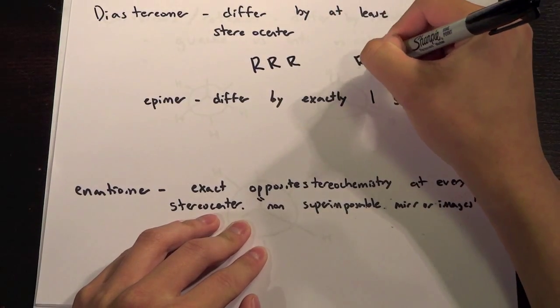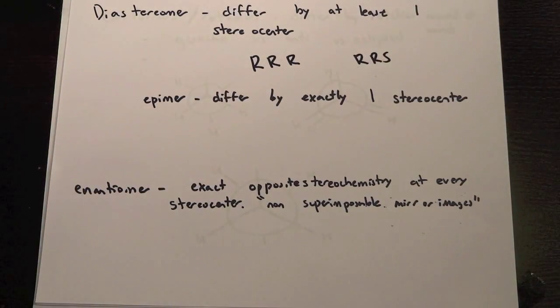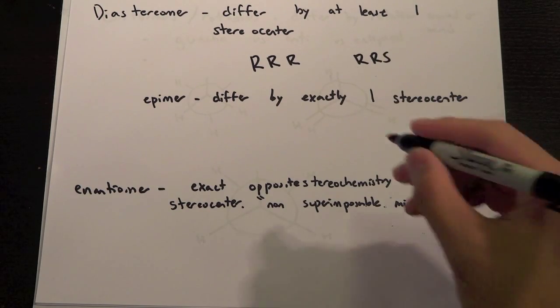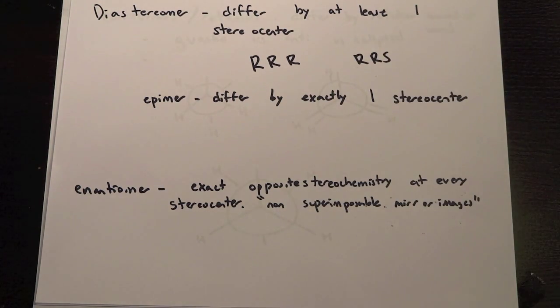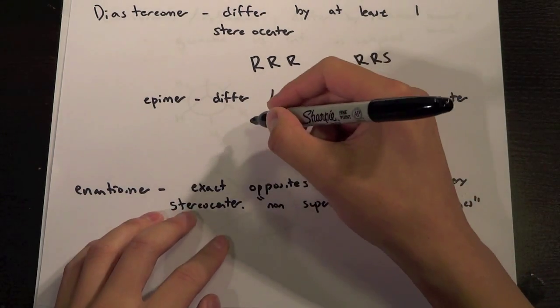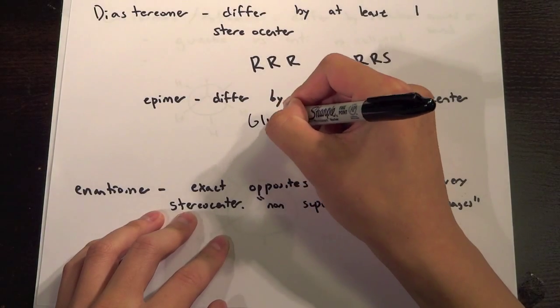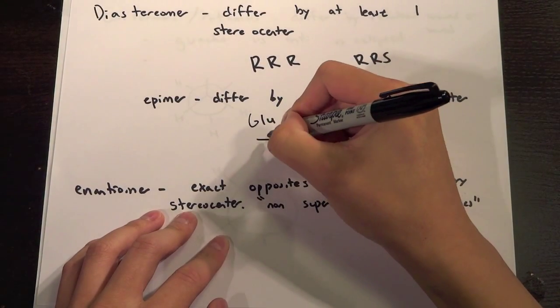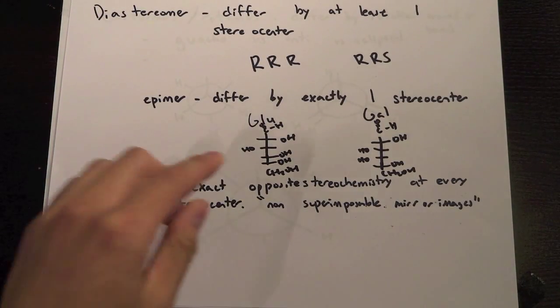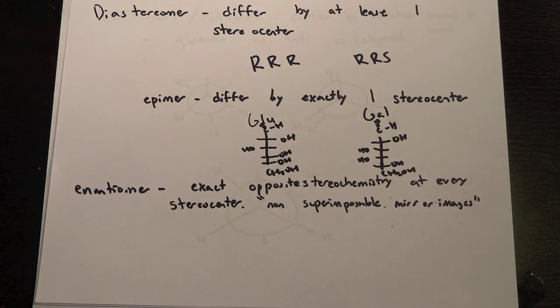That would be a diastereomer. So if you're able to find all the stereochemistry on each of the stereocenters and there are RRR versus RRS, diastereomer. And epimer would be something that differs by exactly one stereocenter, and so this would also be an epimer, but the most common one is glucose versus galactose. So glucose looks something like this, so it just differed by carbon number four.